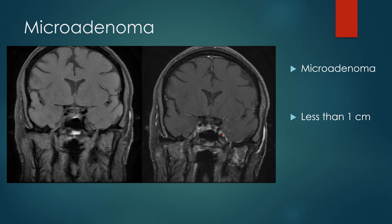A useful trick: if you think there might be a microadenoma and you're not sure, look at the pituitary infundibulum. Wherever there is pathology in the gland, it replaces normal tissue and you'll see deviation of the stalk to one side of midline. In this example, because there's a left microadenoma, the stalk is slightly deviated to the right at its insertion. As the lesion gets bigger, the stalk deviates even more.